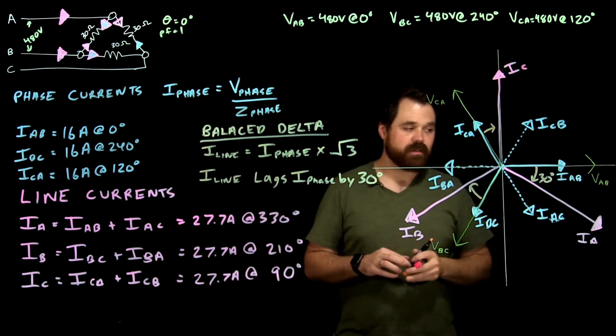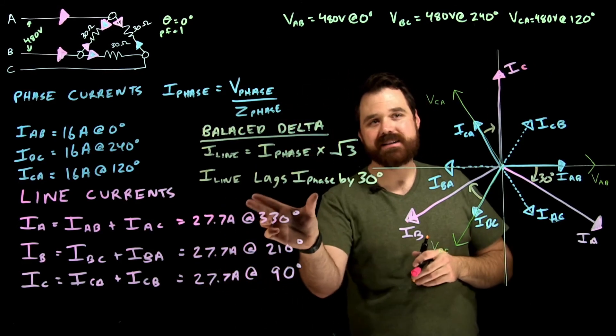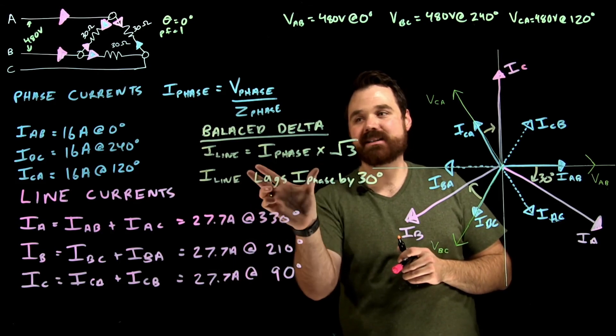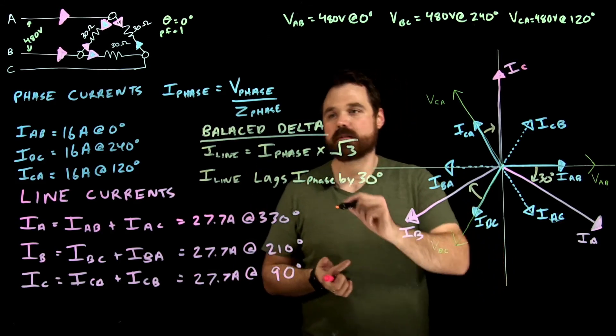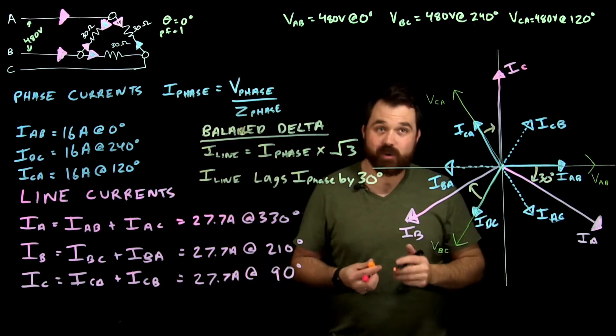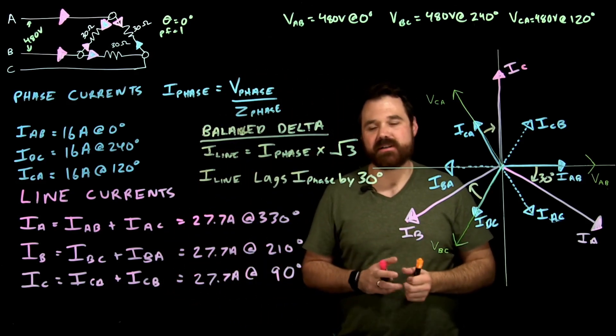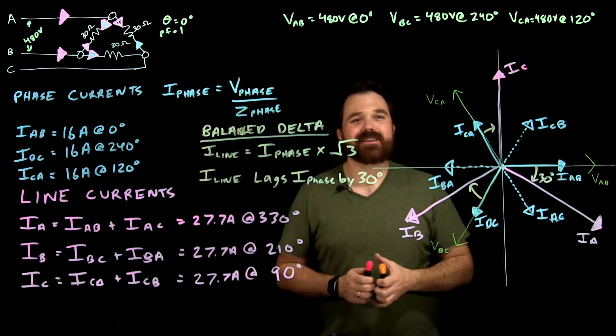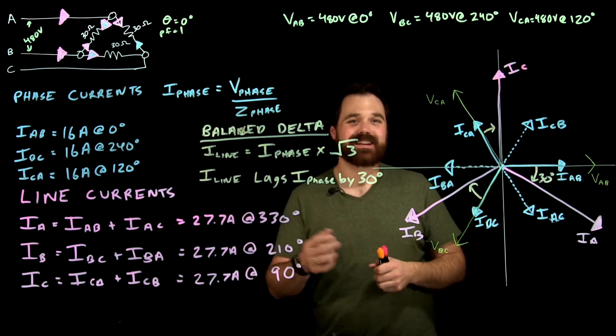Now again, these rules will only apply to that delta balanced circuit. And in order to be balanced, we have to meet those two criteria of the same power factor and the same impedance in each phase.